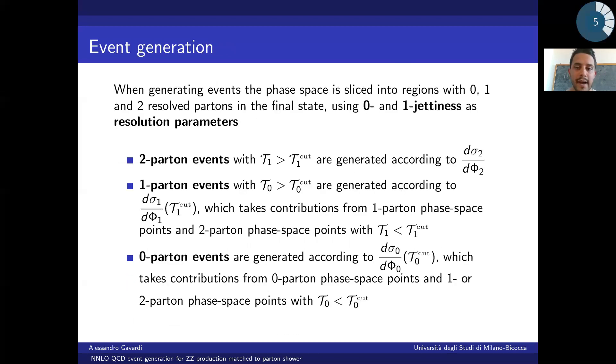Let's begin with a very brief explanation of the Geneva approach. In order to generate events within Geneva, we need to divide the entire phase space into three regions with zero, one, and two resolved partons respectively. In order to do that, we will make use of two resolution parameters, which we will take to be zero and one-jettiness.